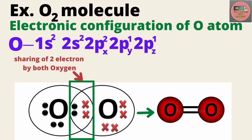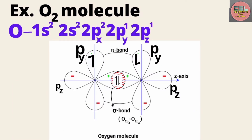Only the 2py and 2pz orbitals will participate in bond formation by overlapping. When the 2pz orbital of one oxygen atom and the 2pz orbital of another oxygen atom, having opposite spins, come close to each other, they form a sigma bond — a single bond.